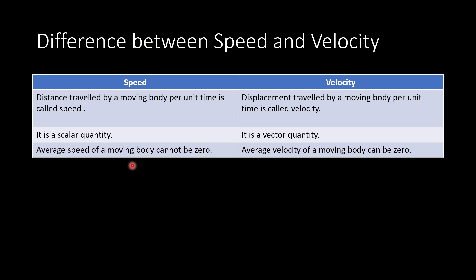Average speed of a moving body cannot be zero because distance cannot be zero. But average velocity of a moving body can be zero because the displacement can be zero.